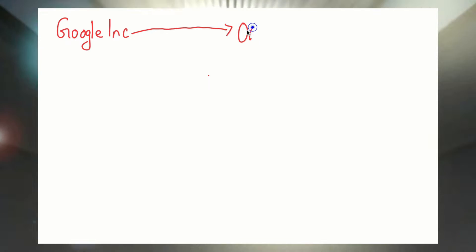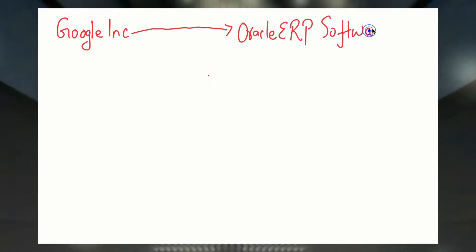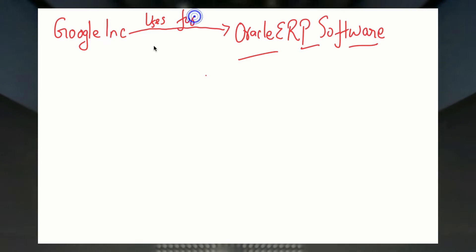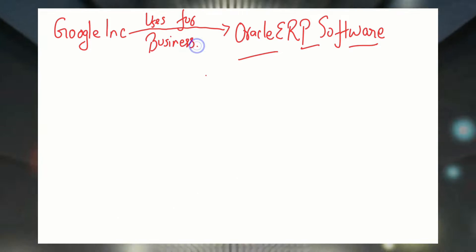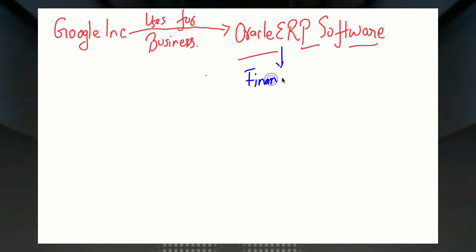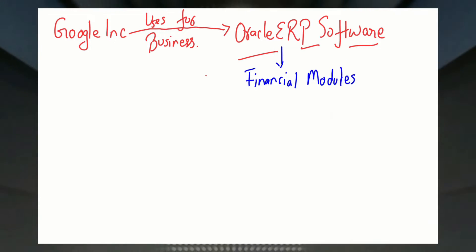Let's say there is a company called Google Inc and that company is using Oracle ERP. Oracle is a software — it's an ERP software which is used to run a business. So Google Inc uses this Oracle ERP to run their business, and we will only talk about financial modules right now.